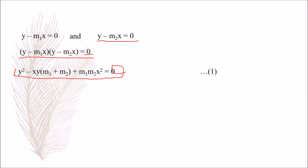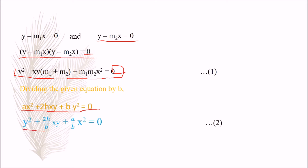The given equation is ax² + 2hxy + by² = 0. If we divide this equation by b, we get y² + (h/b)xy + (a/b)x² = 0. Let us name this equation 2. Comparing coefficients of xy: m₁ + m₂ = -2h/b. Comparing coefficients of x²: m₁m₂ = a/b.